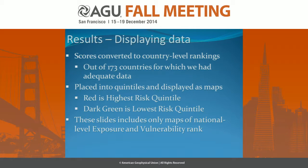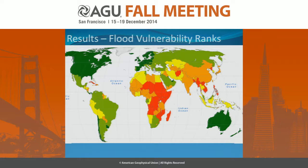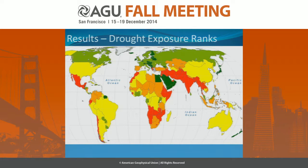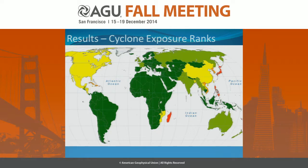For flood exposure, you see a lot of risk in Southeast Asia, South America, and some in Sub-Saharan Africa. When you account for drinking water access and adaptive capacity, the results change quite a bit — Sub-Saharan Africa shows a lot more red, as you might expect, and Southeast Asia still has a lot of red. India and China are examples of big countries with high risk. For drought, likewise, Sub-Saharan Africa has more exposure, along with South Asia and Southeast Asia. When it comes to vulnerability, that shifts a little bit.